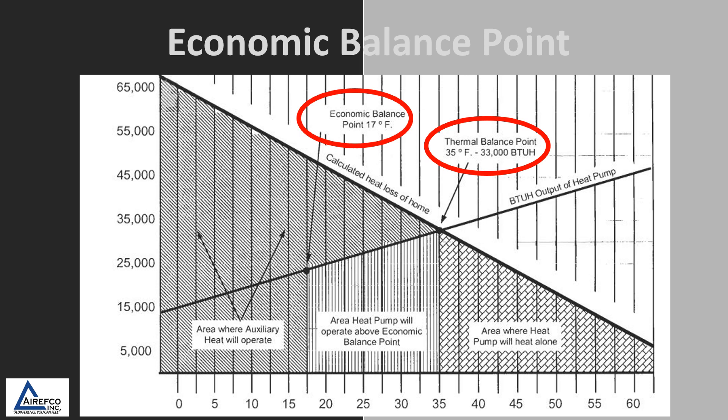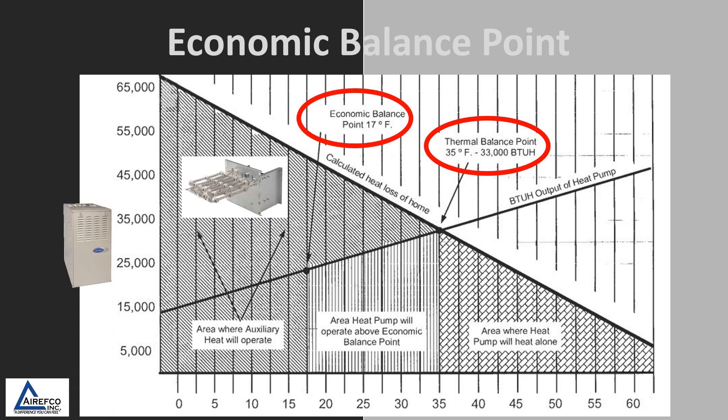This is the balance point where we switch from the operation of the heat pump to auxiliary heat. In most cases when we're talking about economic balance point, this would be a dual fuel application where operating the gas furnace would be more economical than operating the electric heat pump.